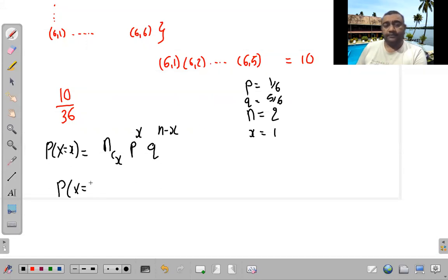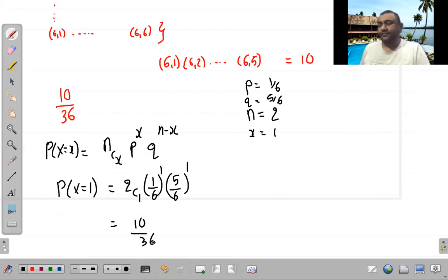Now I need one success. So 2 c 1, p which is my success 1 by 6 raise to 1, into 5 by 6 raise to 1. If I have simplified it, then my answer is 10 by 36. Now you should think what was the binomial distribution in this. Is it not?